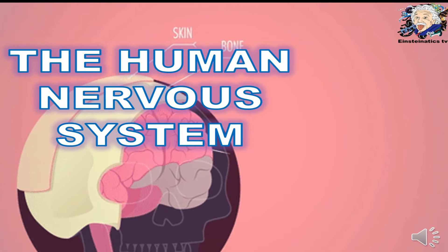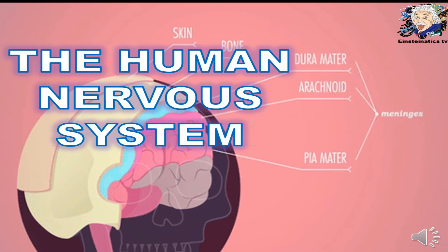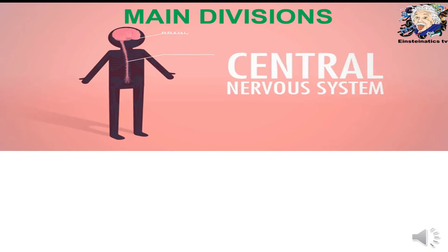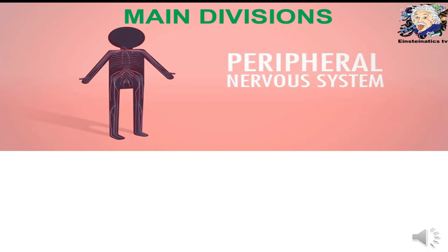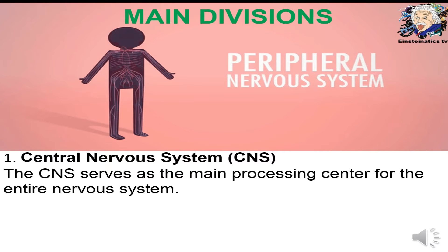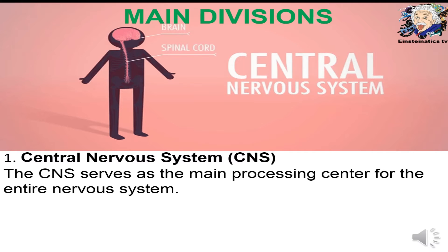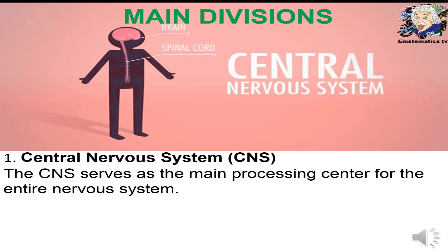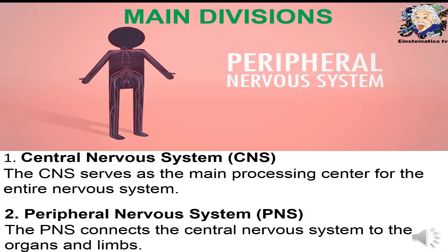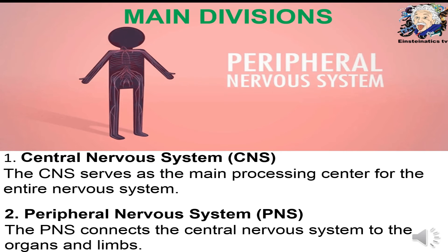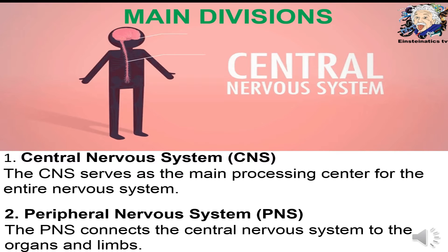Now let us explore the human nervous system, its major divisions, parts, and specific functions. The nervous system is divided into two main divisions. The first one is known as the central nervous system or CNS, which serves as the main processing center for the entire nervous system. The second division is known as the peripheral nervous system or PNS, which connects the central nervous system to the organs and limbs.